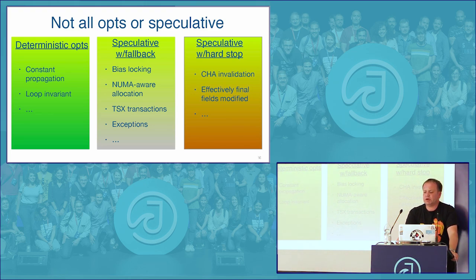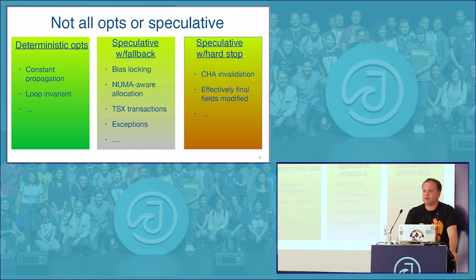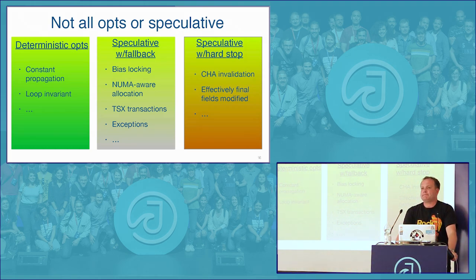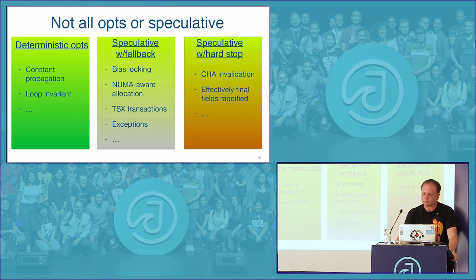The third type requires a hard stop: if those situations are detected, we must discard this compilation and never use it again. This is typically related to new class loading and invalidation of the class hierarchy analysis. For example, Zing has an optimization over effectively final fields — when you declare a final field, the compiler may assume it's immutable. But if you use Unsafe or reflection to modify that value, we can detect that and recover. Any compilation based on the assumption that the field is a constant must be discarded.